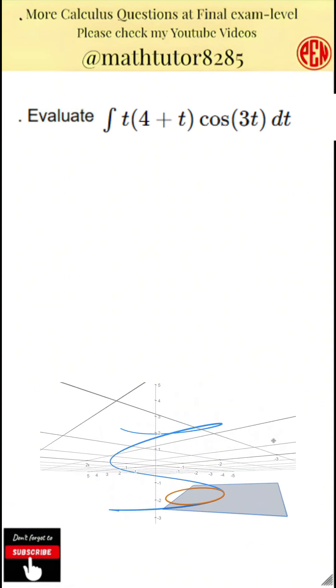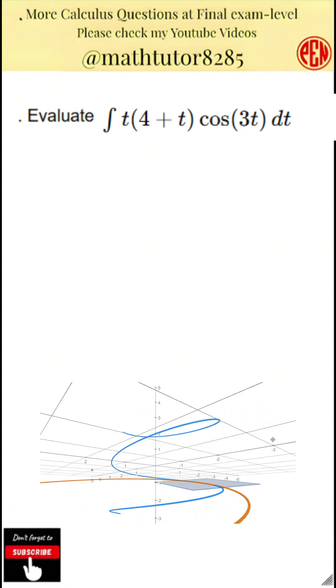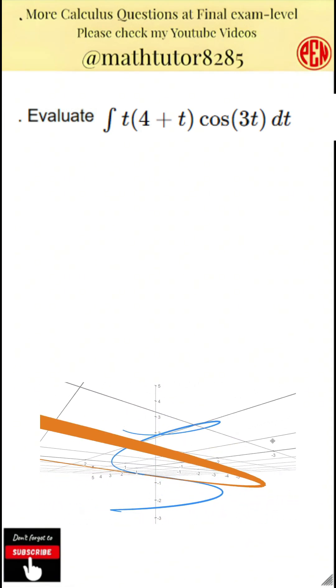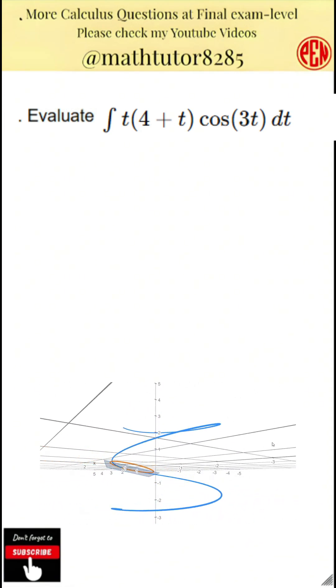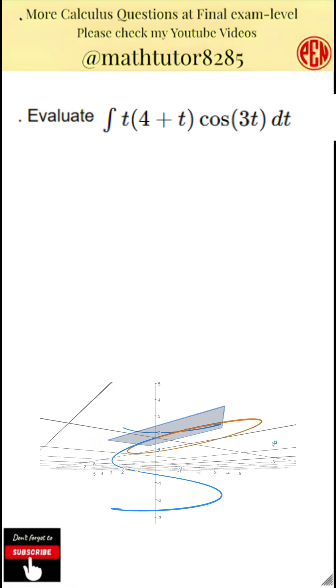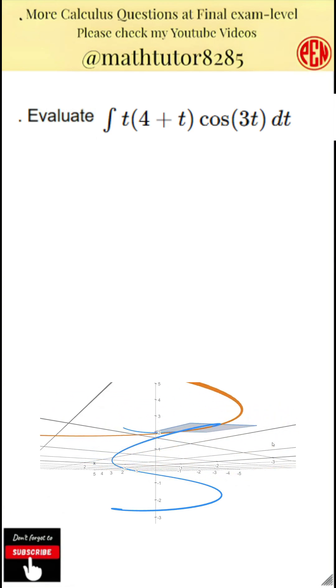This question uses integration by parts. Evaluate the definite integral of the product of the expression t times the quantity 4 plus t and the cosine of 3t with respect to t.